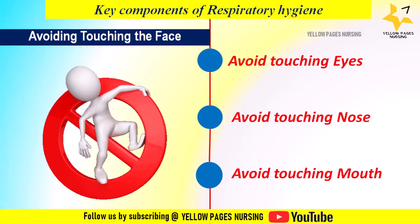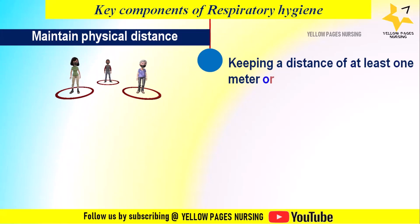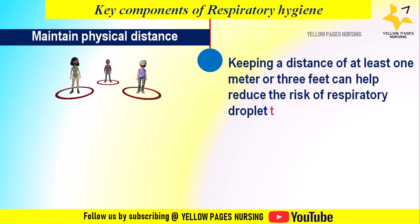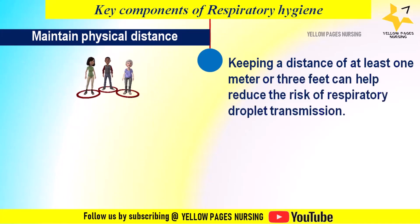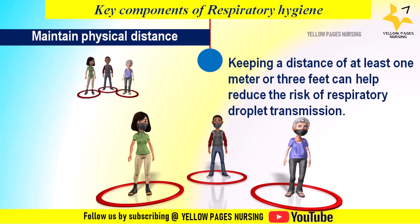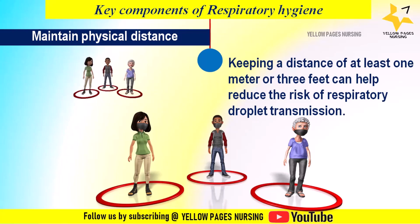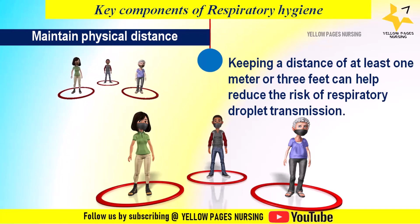Next is maintaining physical distance. Maintain a safe distance from others, particularly if they are coughing, sneezing, or showing symptoms of a respiratory illness. Keeping a distance of at least one meter or three feet can help reduce the risk of respiratory droplet transmission.